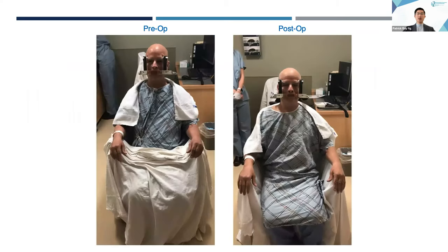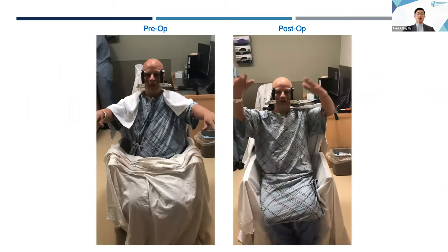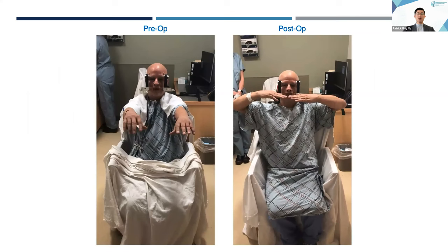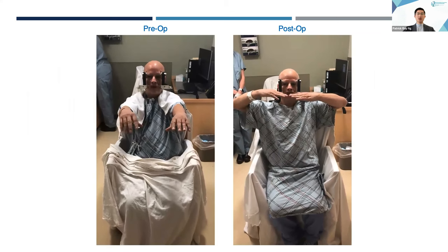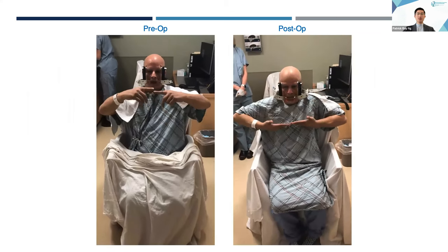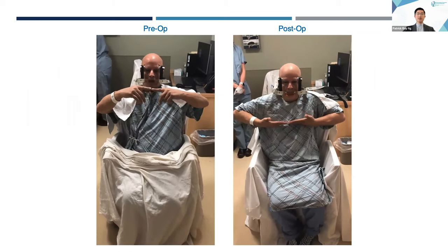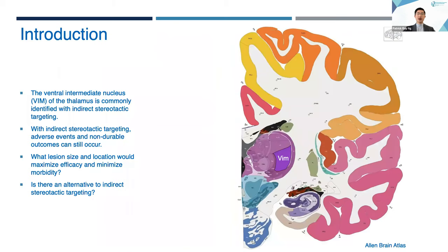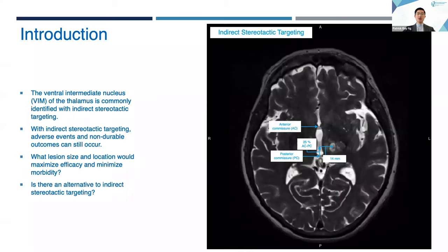Focus Ultrasound Thalamotomy offers dramatic outcomes for patients living with medically refractory essential tremor. This is one of Dr. Reese Cosgrove's recent patients, pre-op on the left and post-op on the right. The ventral intermediate nucleus of the thalamus, or VIM, is commonly targeted for essential tremor. Most surgeons use indirect stereotactic targeting, utilizing the anterior commissure and posterior commissure to locate the VIM. While indirect stereotactic targeting has stood the test of time, adverse events and non-durable outcomes can still occur if the lesion is not perfectly placed.